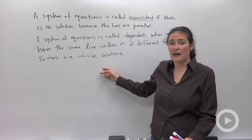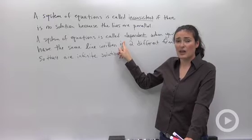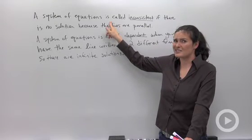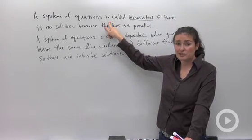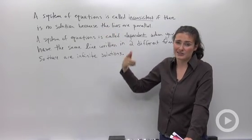that means you're going to have the same line written in two different forms, which we call dependent. If you get something like 5 equals 6, something that's never true, that means you have two lines that never cross because they're parallel.